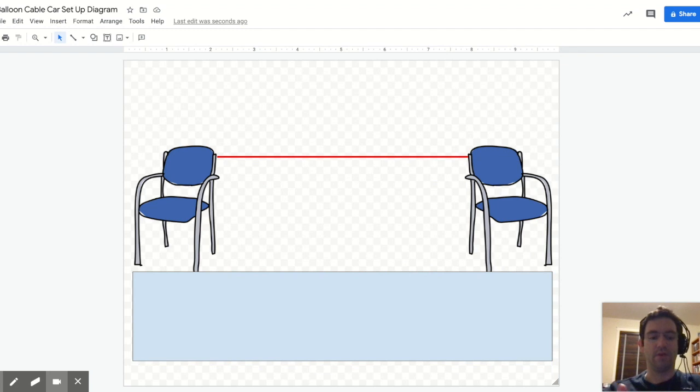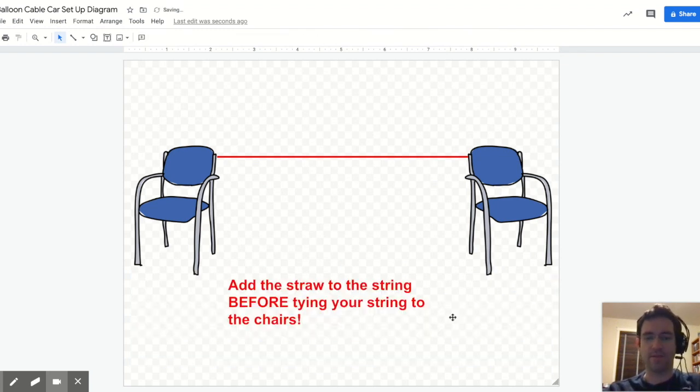Here's your big reminder, though. It's really important that you attach the straw to the string before you tie your string to the chairs, which is why I showed how to make the cart first. If you tie the string on, you're going to get frustrated because you're going to have to come back, untie it, put the straw on, and then do this.